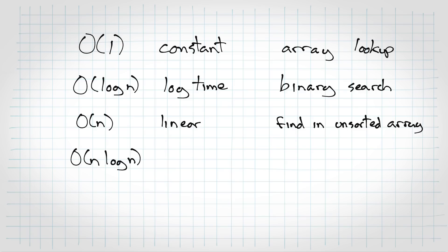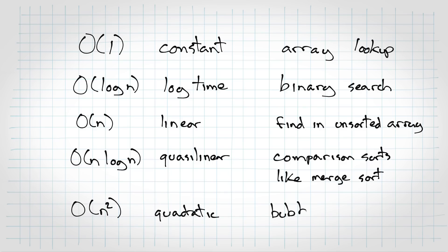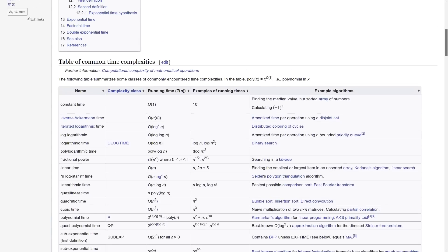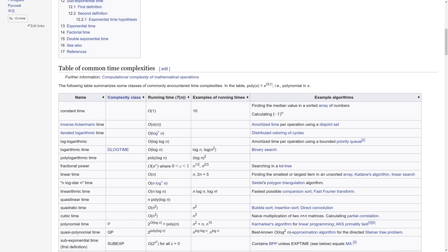There's order n log n, this has a bunch of different names. We'll go with quasi-linear. Anyway, this is comparison sorts, like merge sort. And there's order n squared, quadratic. Bubble sort comes to mind. Here's a bigger list if you want to go through them all. Can't say I've personally run into a lot of these, but they're interesting, so take a look.